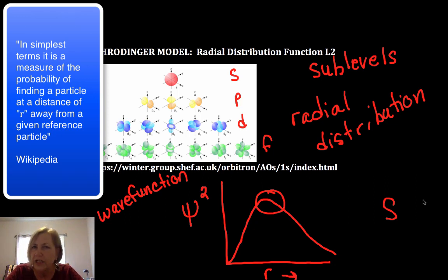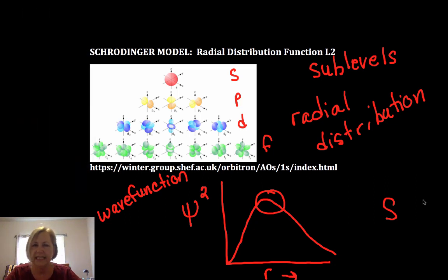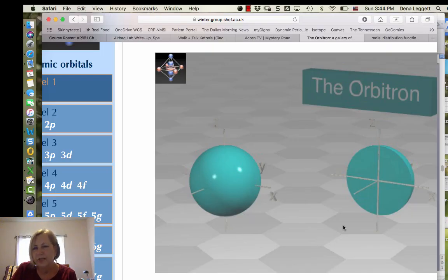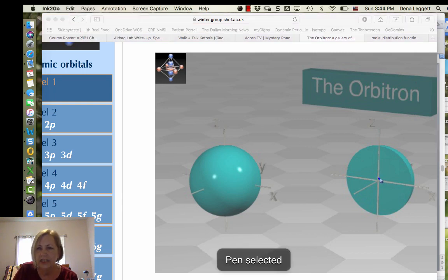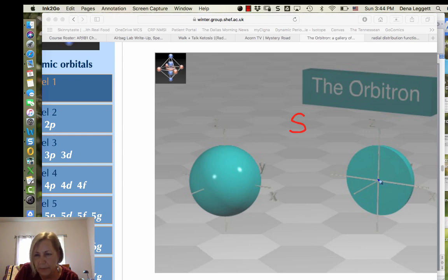But let me shift to the winter orbital site to give you what I think will be a little bit better picture. This is one of my favorite sites when talking about the electronic structure. So if this is an S sub-level, we could draw the radial distribution just to give you an idea like this. So it's most probable at a particular distance, and then it tails off as you get further away.